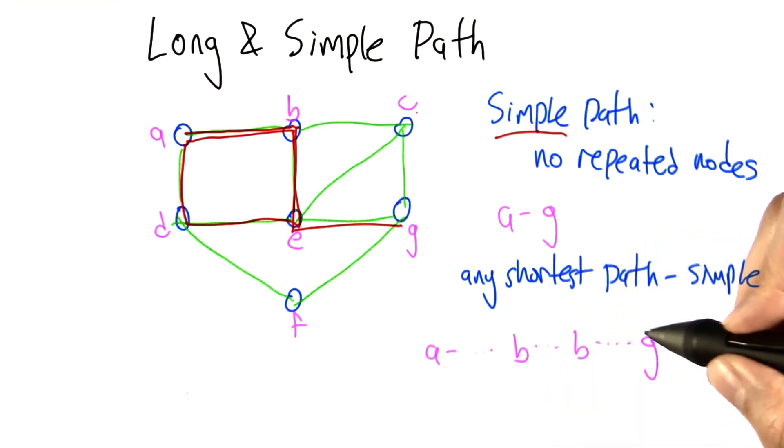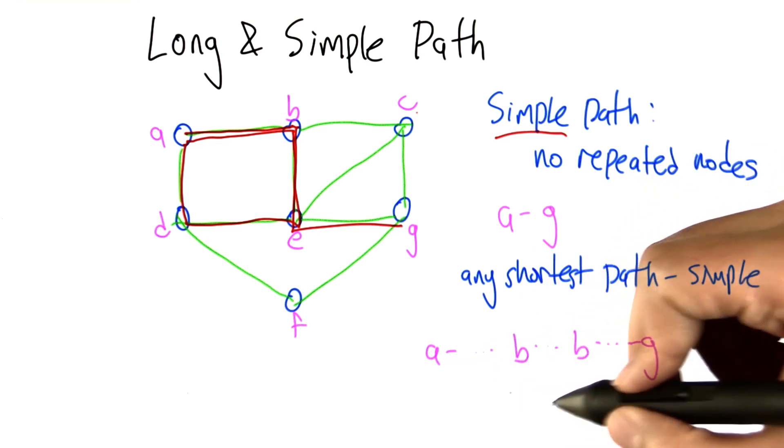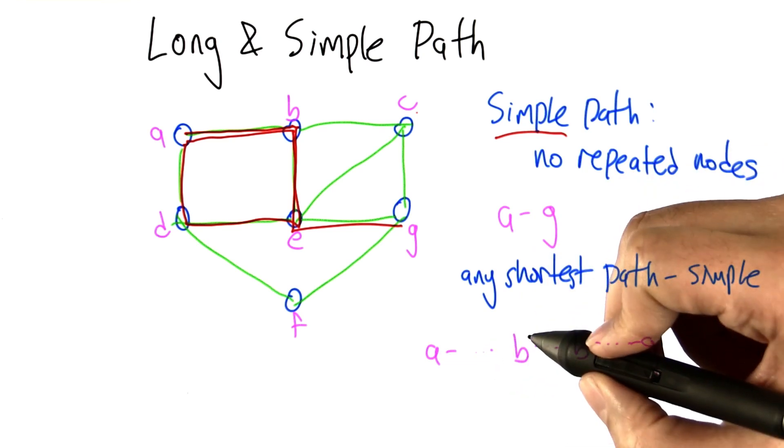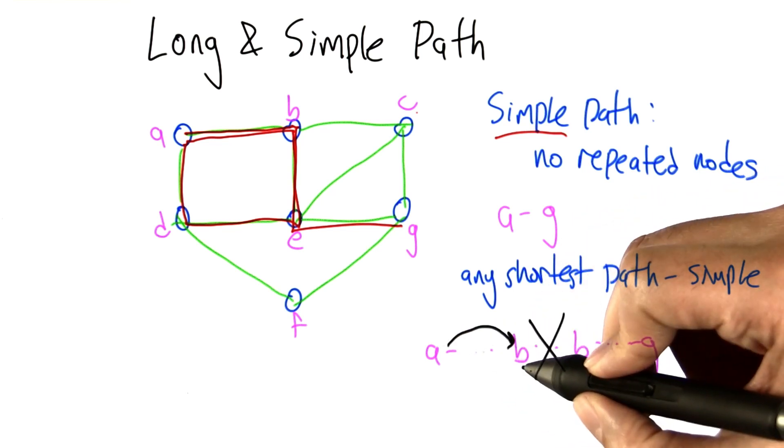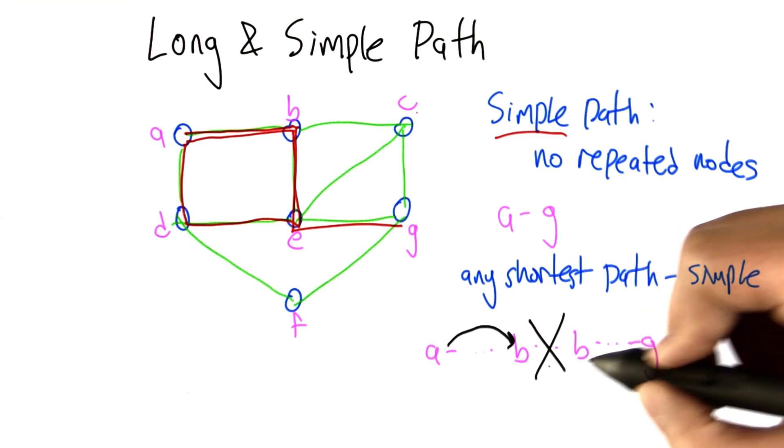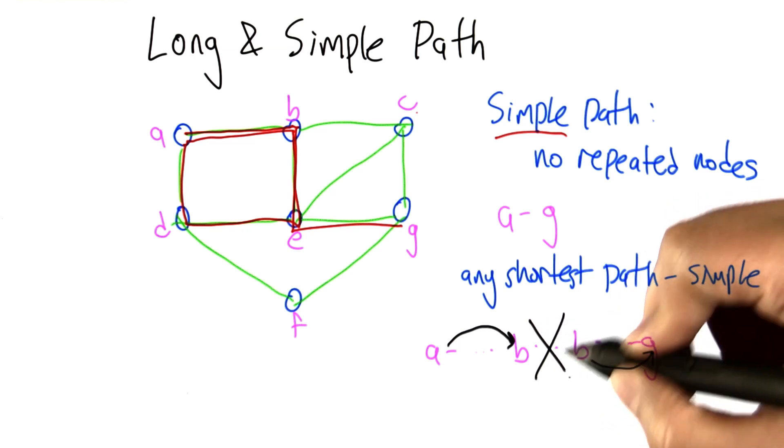Because if we had any repeats along the way from A to G, if we visit B and then sometime later we go back to B, then there's going to be a path that just goes from A to B and then using this path from B to G. We don't need any of these links in between.